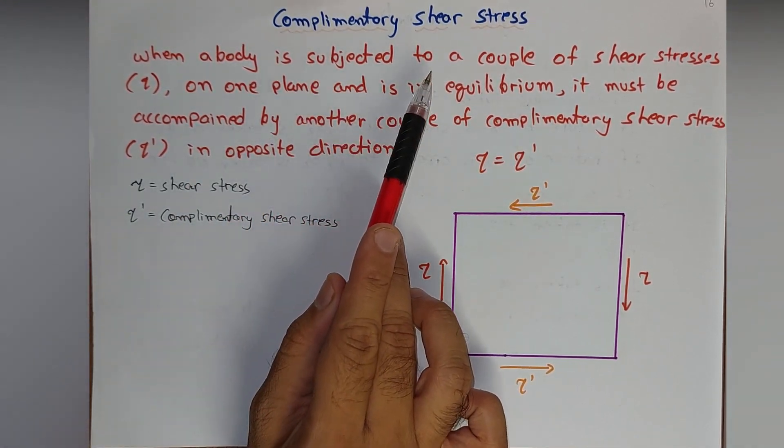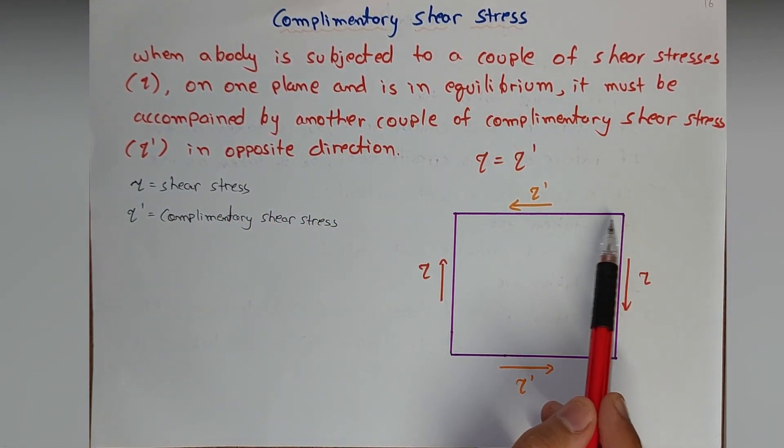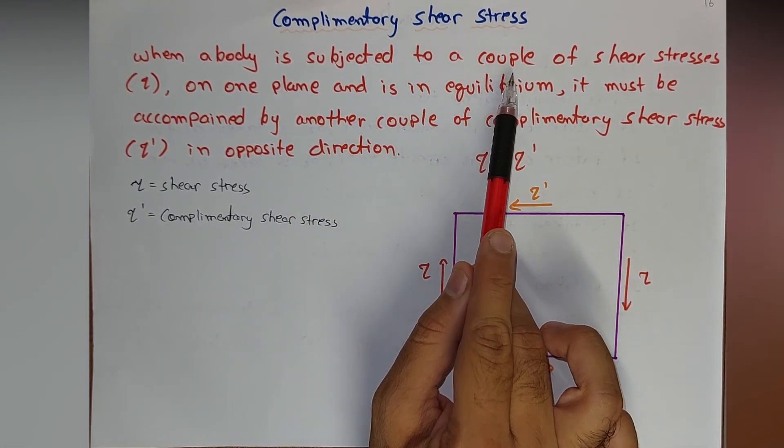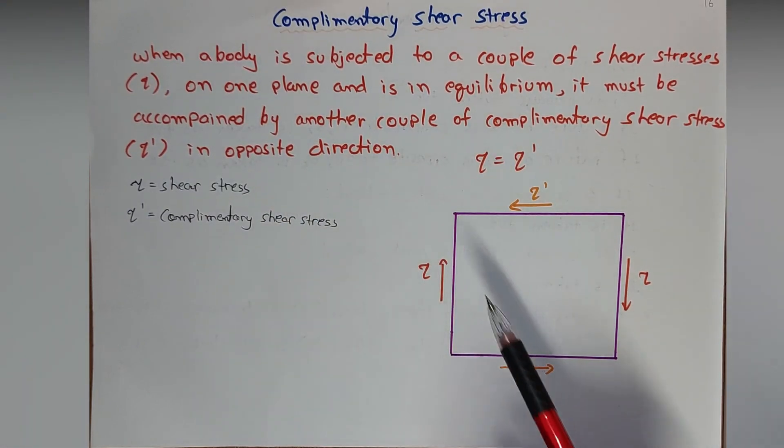When a body is subjected to a couple of shear stresses, this is our two-dimensional plane, or we can say it is a body subjected to a couple of shear stresses tau here.